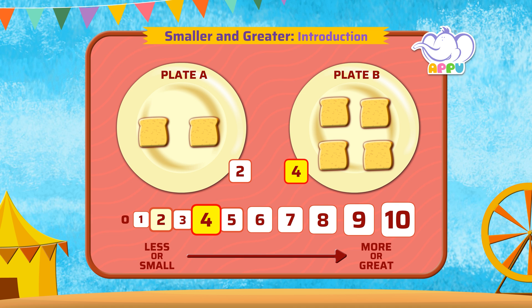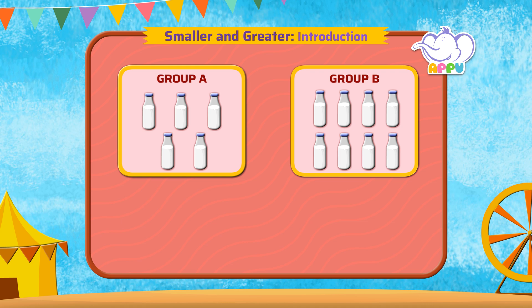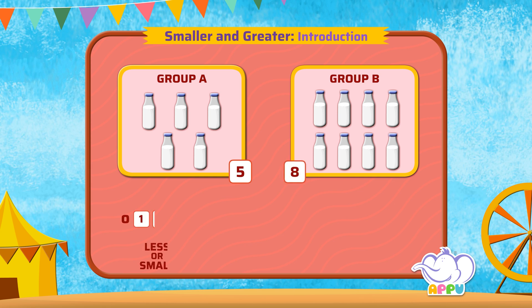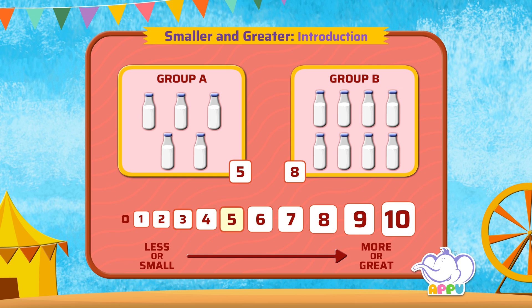Bravo! Now let us see which has the smaller number. Group A has 1, 2, 3, 4, 5 milk bottles. And Group B has 1, 2, 3, 4, 5 milk bottles. If we see the order of numbers, 5 comes before 8. So 5 is smaller than 8. Brilliant!